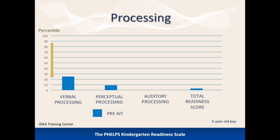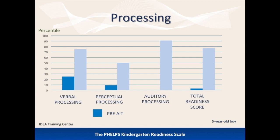His scores are at the 25th percentile or lower, indicating this child lacks the abilities necessary for success. Instead of entering kindergarten, he continued in preschool for another year, completed Berard AIT during Christmas vacation, and was retested four months after completing Berard AIT. His scores are now at the 50th percentile or above, with auditory processing at the 90th percentile. His scores reflect dramatic improvement, and he subsequently went to kindergarten and had a very successful year.